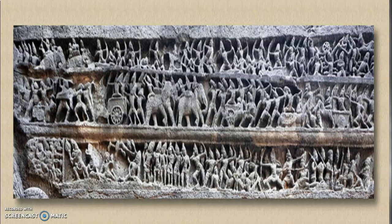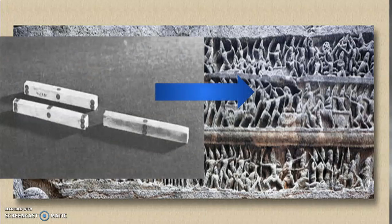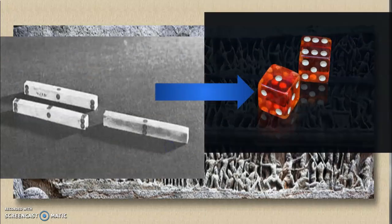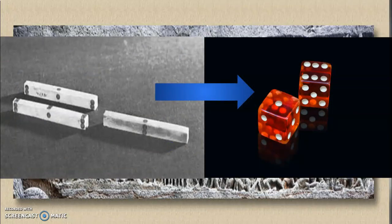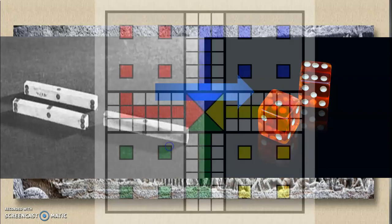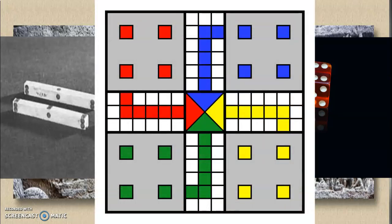No one can forget that the great Mahabharata started after the Pandavas lost the dice game Chaupar and the insult and humiliation faced by Draupadi. Yet another name of this game is Chopar. The contemporary version was played by Mughal Emperors, a notable example being Akbar. The Pachisi rectangular dice was converted to a cubic one and named Ludo in England in 1896. The Royal Navy then converted it into a board game named Uckers.